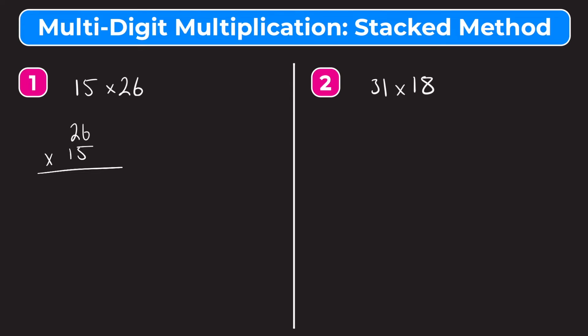Now we just have to multiply down. We're going to multiply 5 times 26, then 10 times 26 — the 1 in 15 is in the tens place, so it represents 10. Starting with 5 times 6, that equals 30, but we can only write the 0 and carry the 3. Then 5 times 2 is 10, plus the 3 we carried is 13. We write 13 here since there are no more places to carry. We can cross off the 3 and the 5 so we don't get confused later on.